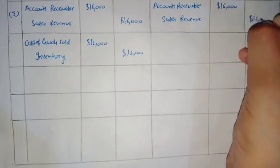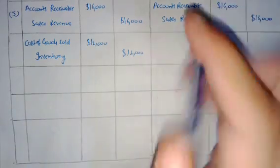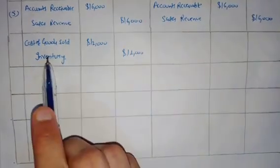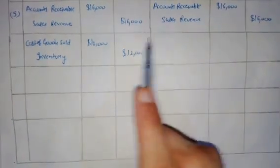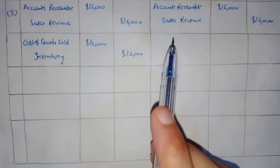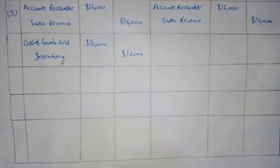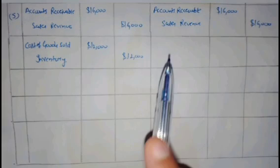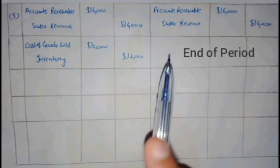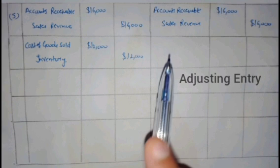Remember, we do not record the cost of goods sold in the expense account under the periodic inventory method. Instead, the cost of goods sold is calculated at the end of the period and recorded in an adjusting general entry.